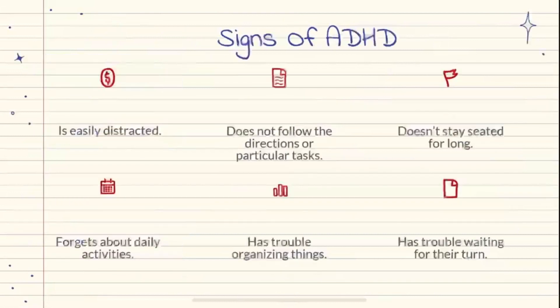Signs of ADHD might vary from person to person and from age group to age group. Common signs in children include: they are easily distracted, they do not follow directions, they don't stay seated for long, they forget about daily activities, they have trouble organizing things, and they have trouble waiting their turn.